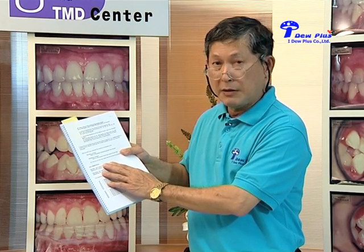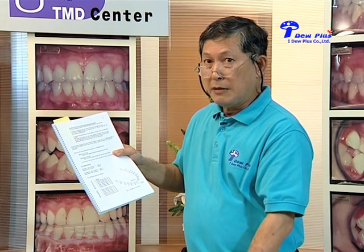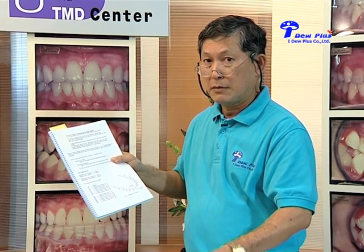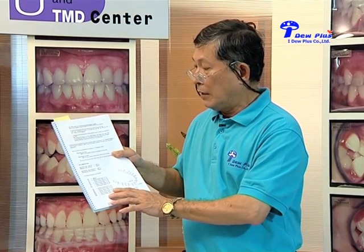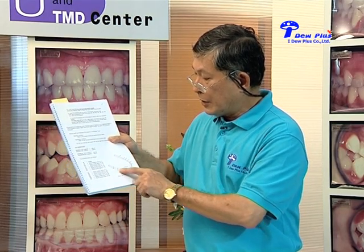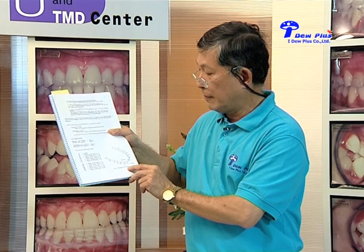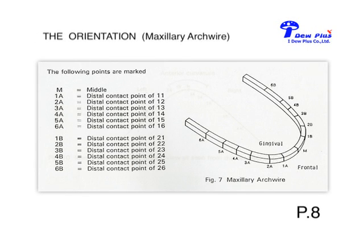Before we get started with first order bends, we have to learn about orientation. For example, when you see an arch wire on the table, you should be able to say immediately: which arch wire is that — is it the top one or the bottom one, the maxillary arch or the mandibular arch? Let me show the arch wire ready for marking. You have to make markings on the maxillary arch wire. The first mark is M — the midpoint or middle of the arch wire. 1A is the right-hand side of the patient; B is the left-hand side of the patient. For the maxillary arch wire, we mark on the frontal gingival side — we call it frontal gingival marking.